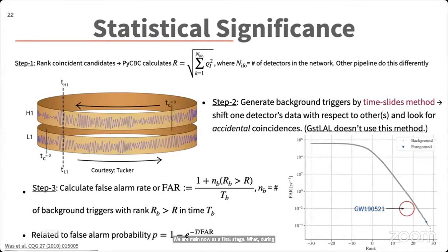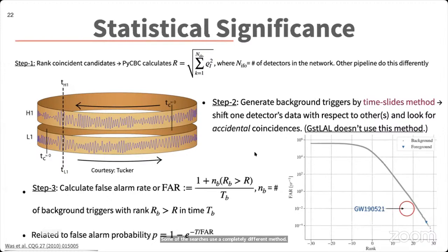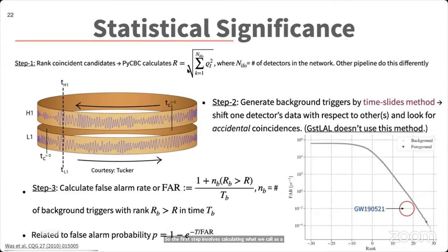As a final stage, we assign a statistical significance to each candidate event — specifically, how far it sits from the noise distribution. One step involves calculating a rank or score for the gravitational wave trigger. One way to calculate this is by quadrature-summing the re-weighted SNRs from multiple detectors, which is called the quadrature sum statistic.